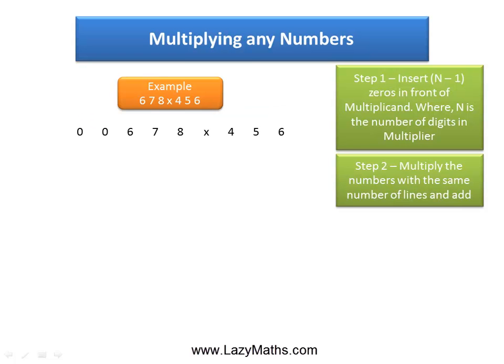The next step is to multiply the numbers with the same number of lines and add them in a particular pattern. So we start with 8 times 6, 48, and we put 4 and 8, with 4 as carryover and 8 in the ones place.